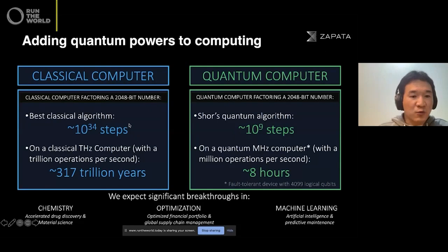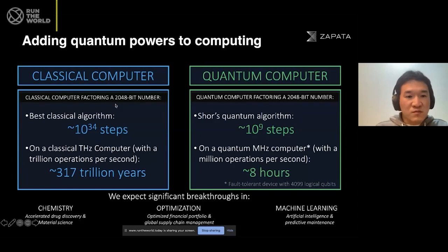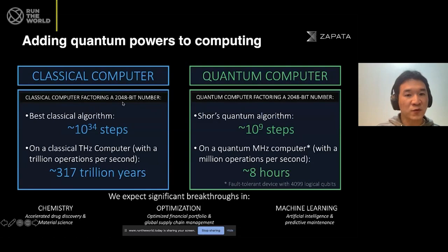This slide really sums up how powerful quantum computing can be. Factoring is a very, very difficult task for classical computers to perform. It might be easy if the number is small, but once the number becomes quite big it gets exponentially difficult. So a 2048-bit number — the best classical algorithm takes 10 to the 34th steps. On a classical terahertz computer with a trillion operations per second, which is quite fast, that can still take up to 317 trillion years to factor a 2048-bit number.